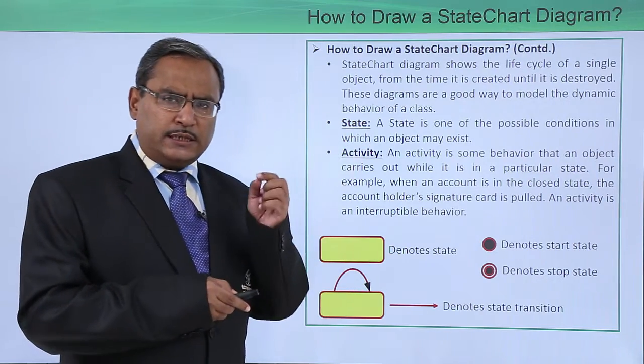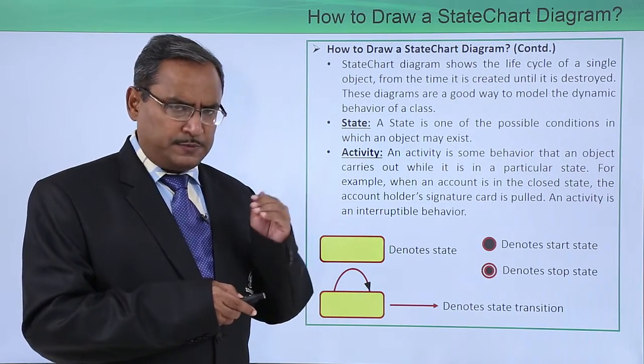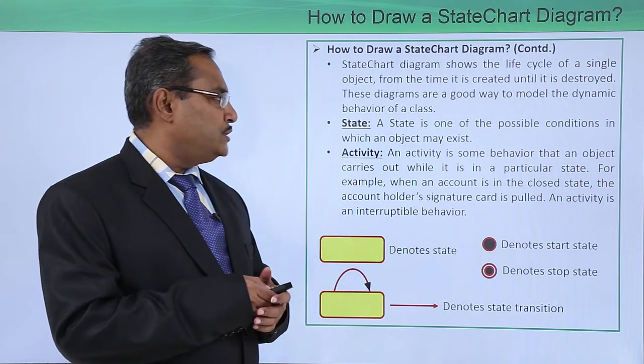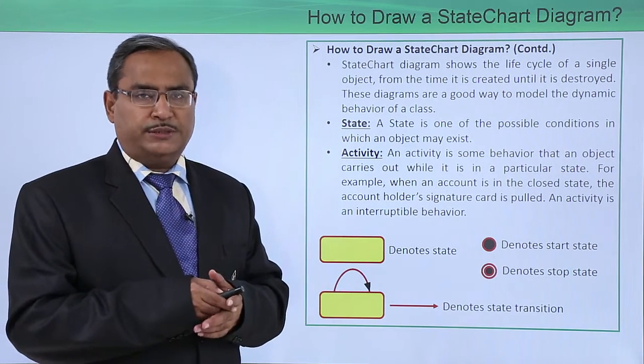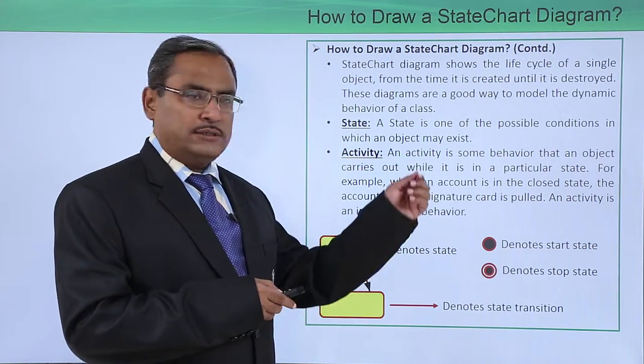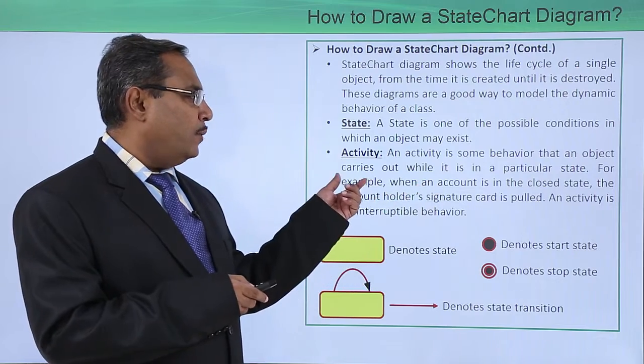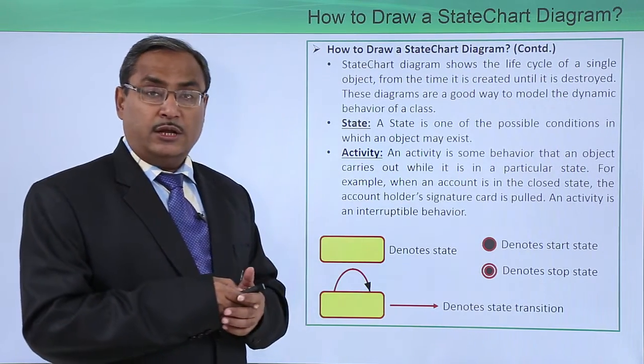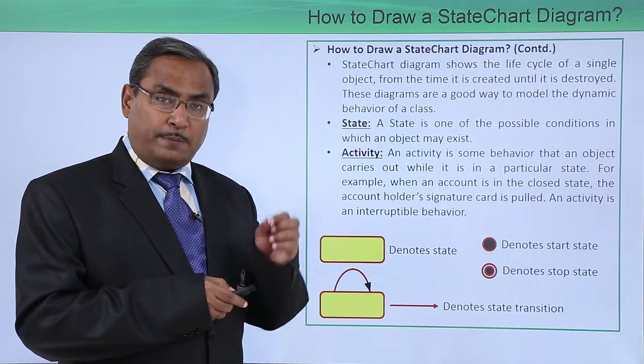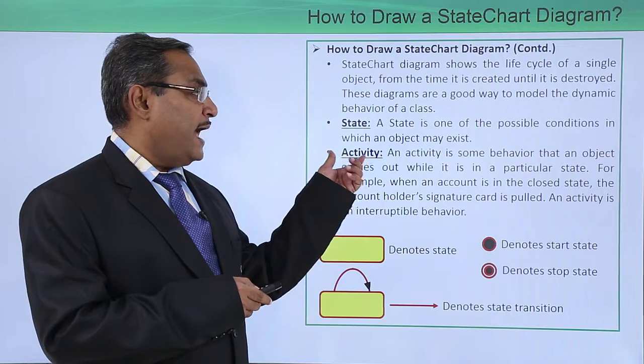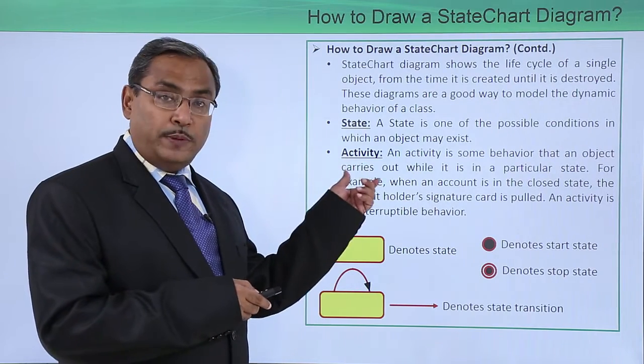Now let me discuss some terminologies explicitly. State. A State is one of the possible conditions in which an object may exist. Activity. An activity is something or some behavior that an object carries out while it is in a particular state. So when one object will be in a particular state, what is the operation it can carry out? What is the activity it can carry out? That will be described here.